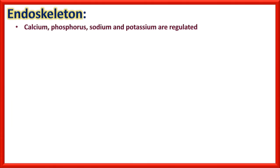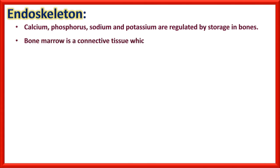Endoskeleton: Calcium, phosphorus, sodium, and potassium are regulated by storage in bones — if they are excess in the body they are stored in bones, and if the body needs them they are recycled from bones. Bone marrow is a connective tissue which gives rise to blood cells, and blood is also a connective tissue. Collagen is a protein making bone and cartilage with living cells.